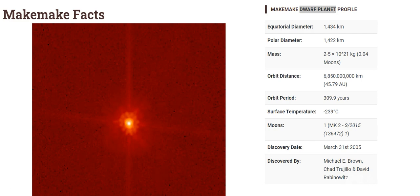Makemake is the second furthest dwarf planet from the Sun and is the third largest dwarf planet in the solar system. Makemake was discovered on March 31st, 2005, and was recognized as a dwarf planet by the International Astronomical Union (IAU) in July 2008.